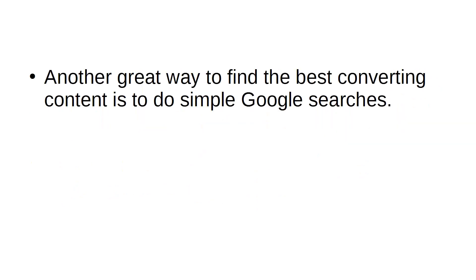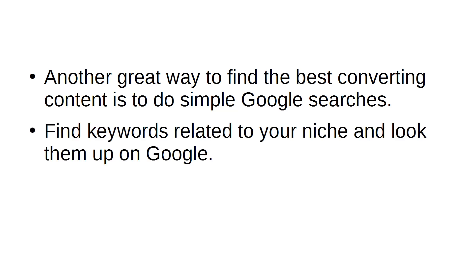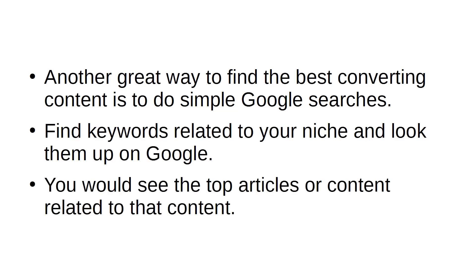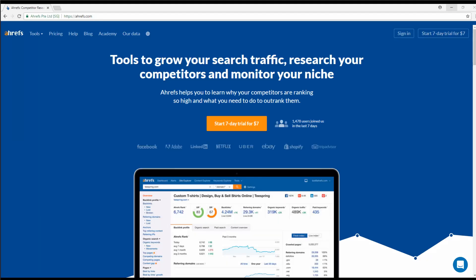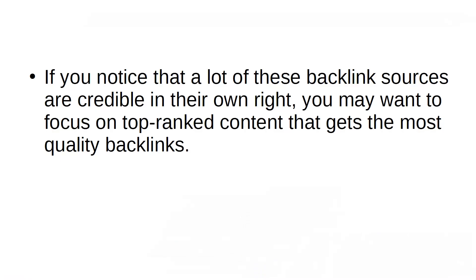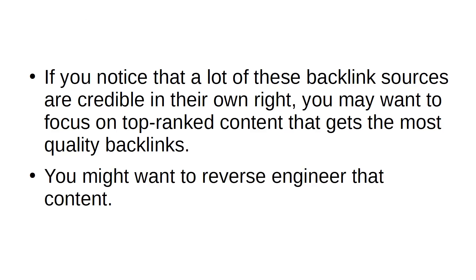Top Search Results with Great Backlinks: Another great way to find the best converting content is to do simple Google searches. Find keywords related to your niche and look them up on Google. You'll see the top articles or content related to that topic. Use tools like ahrefs.com to see the backlinks of these articles. If you notice that a lot of these backlink sources are credible in their own right, focus on top-ranked content that gets the most quality backlinks and reverse-engineer that content.